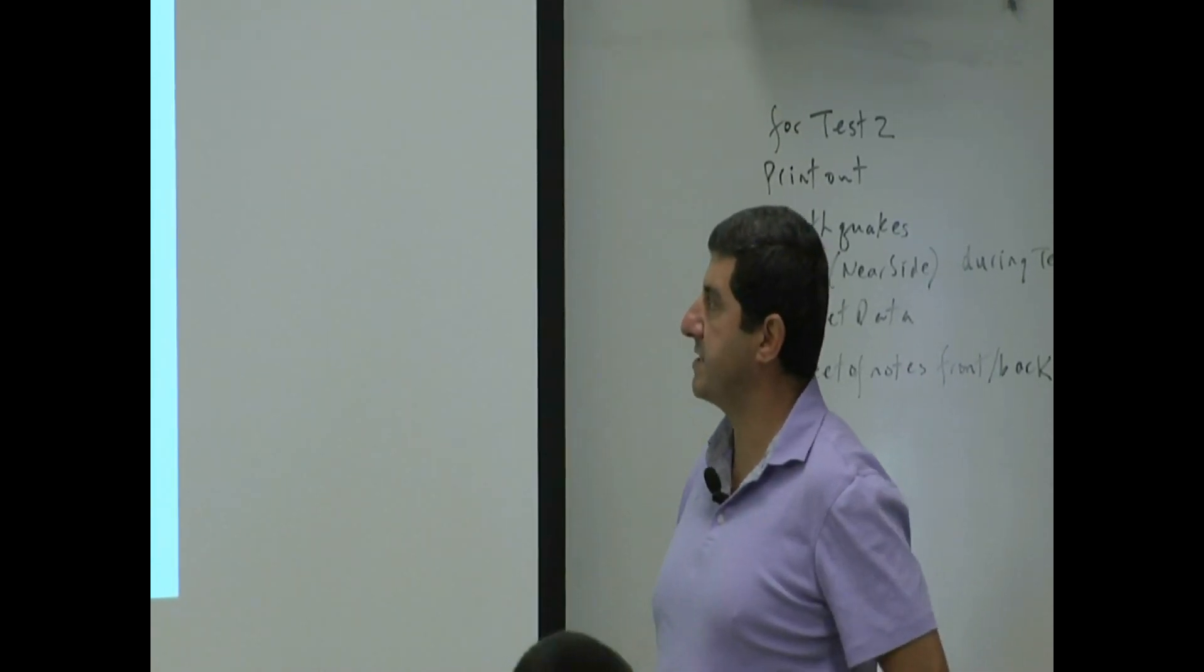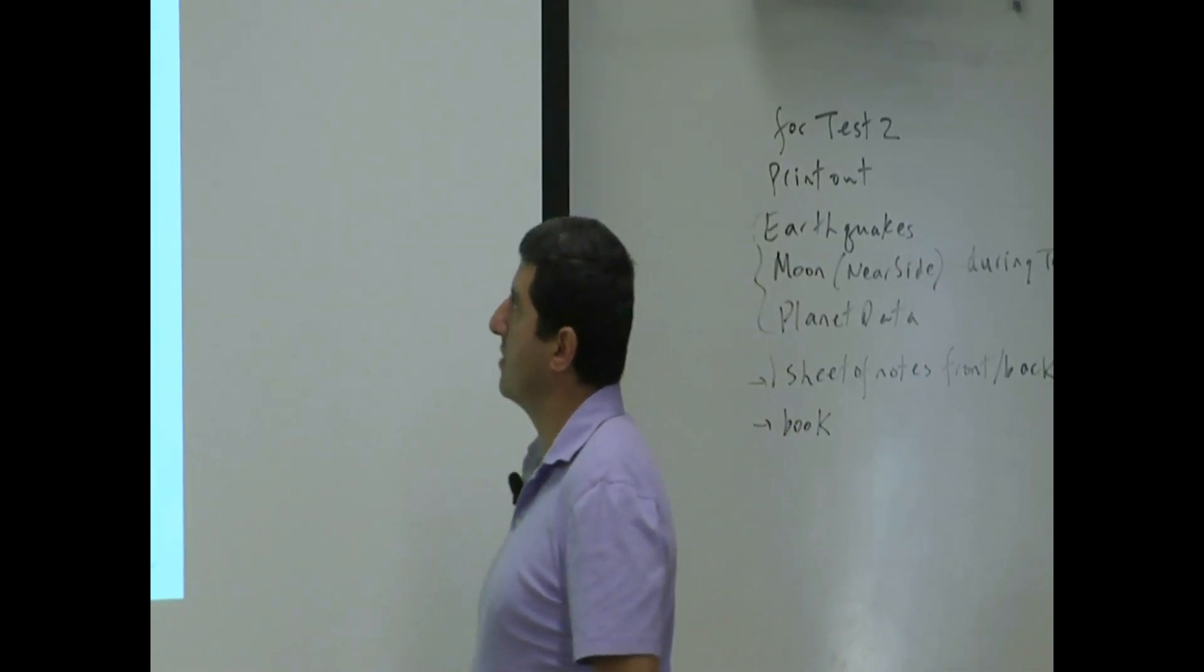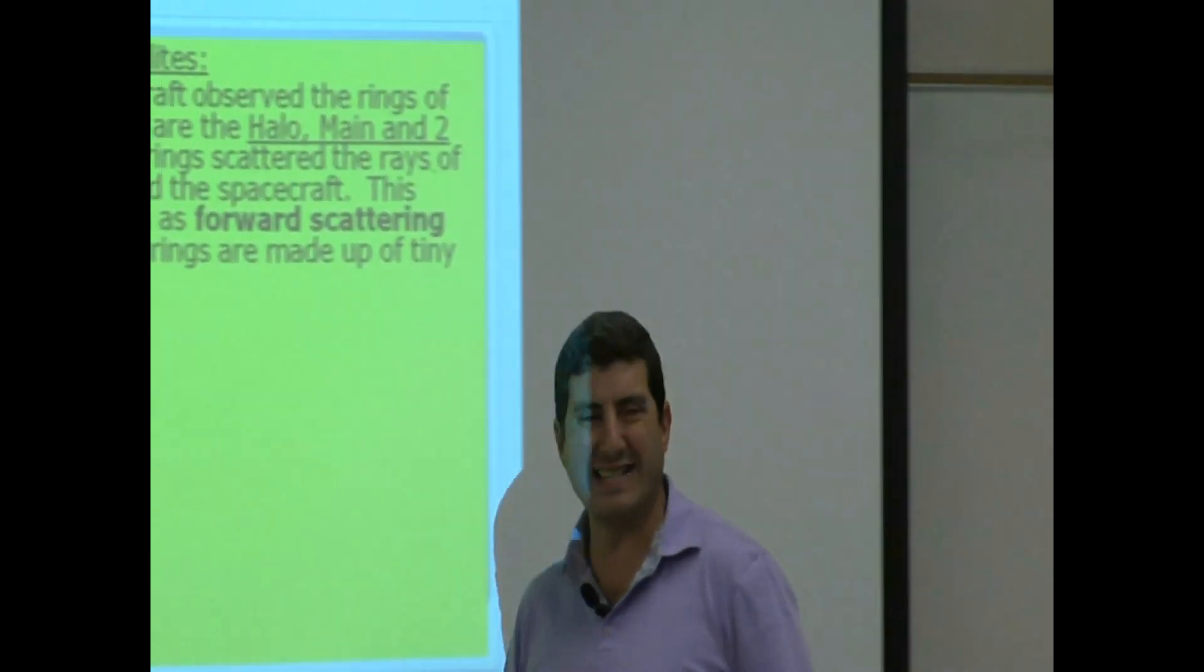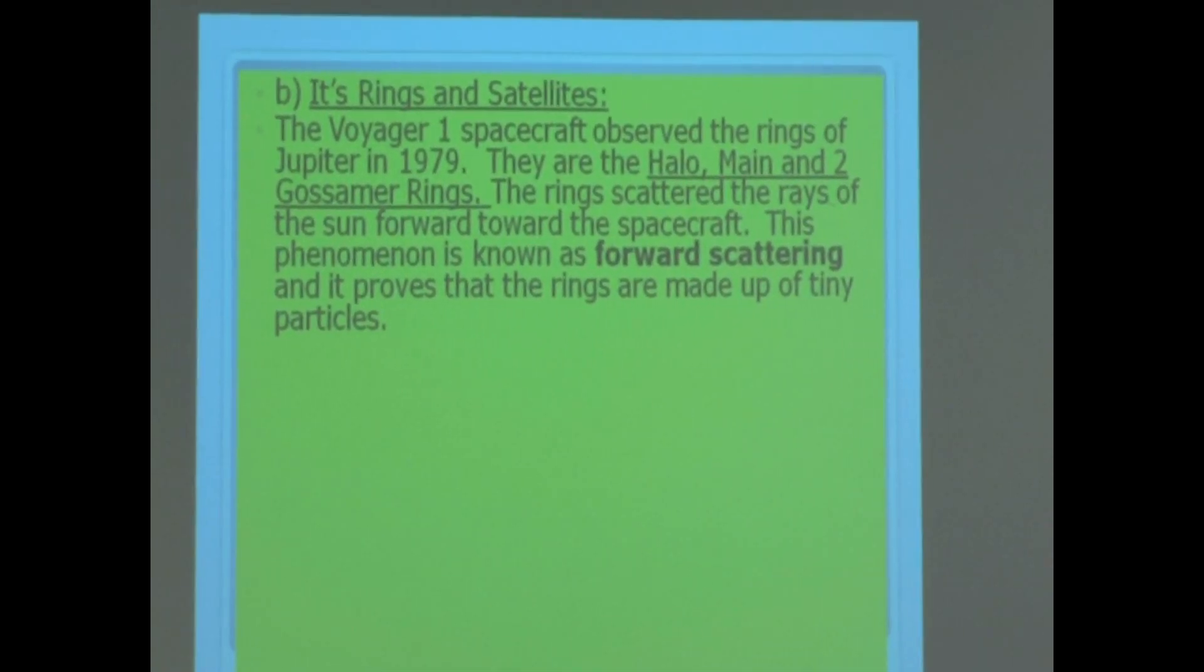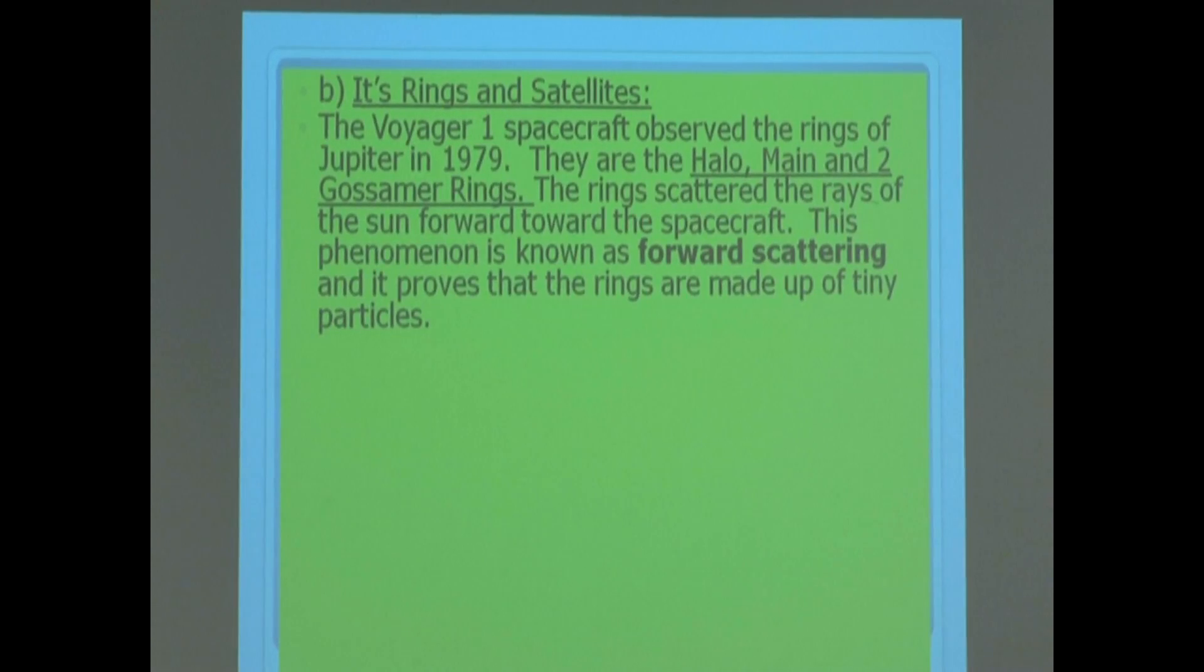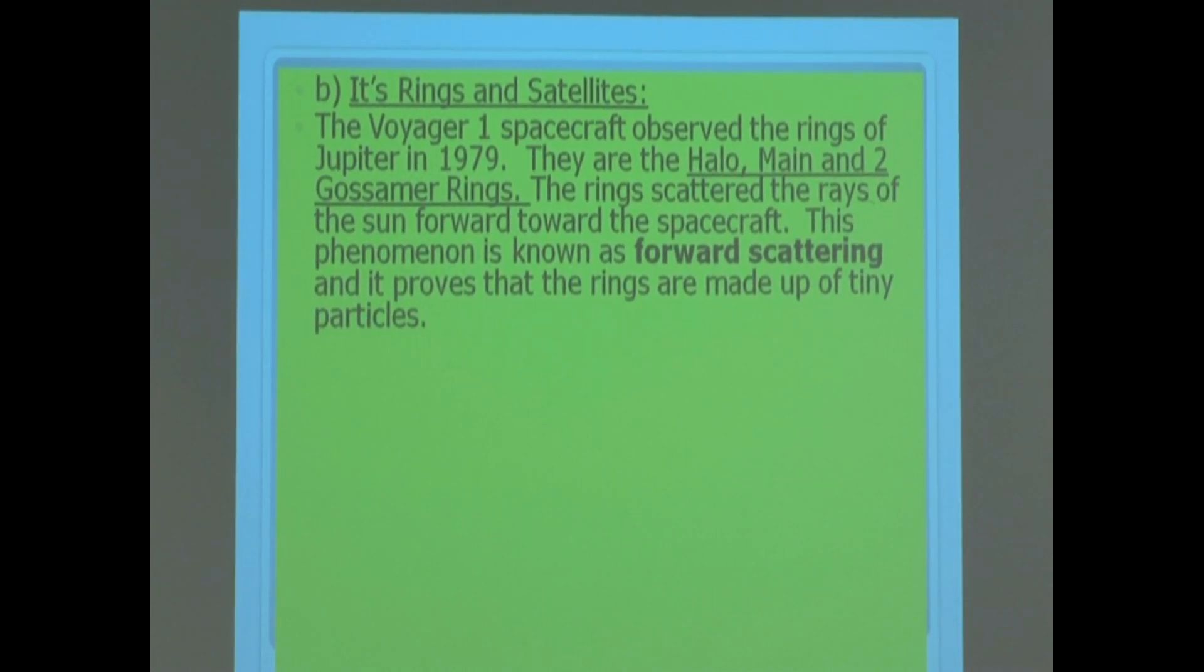It's rings and satellites. The Voyager 1 spacecraft observed the rings of Jupiter in 1979. That's the first time we noticed that it had rings. They are the halo ring, the main ring, and two gossamer rings.